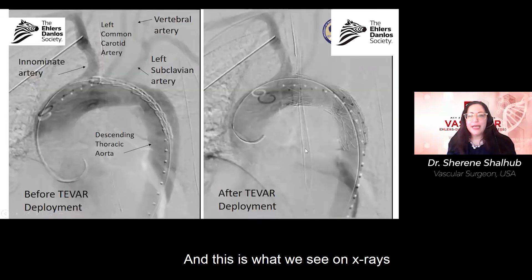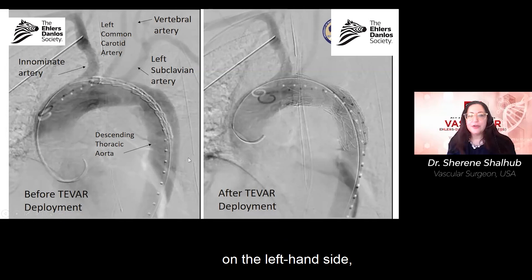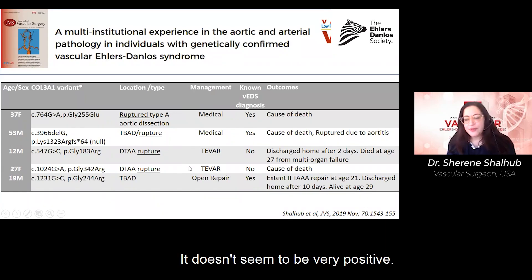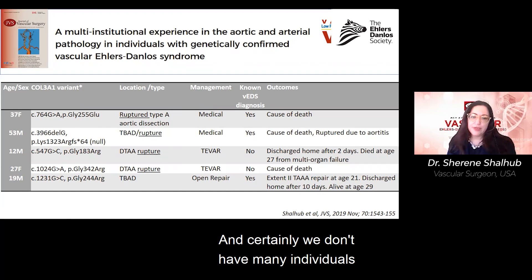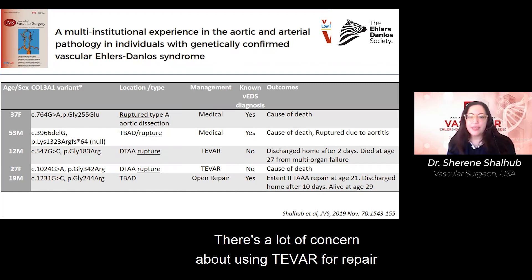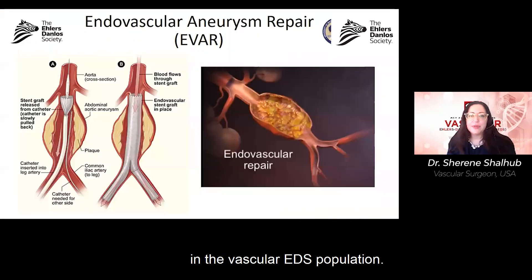This is what we see on x-rays — the device constrained on the left-hand side and then deployed on the right. In terms of experience with thoracic repair using TVAR, it doesn't seem very positive, and we don't have many individuals who have had TVARs. There is significant concern about using TVAR for repair in the vascular EDS population.